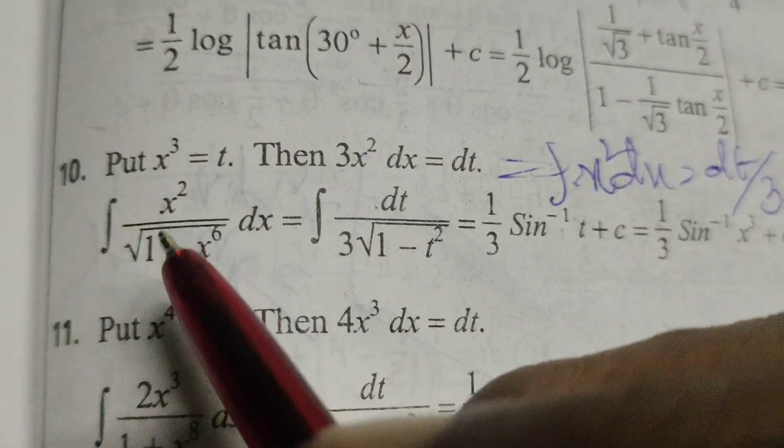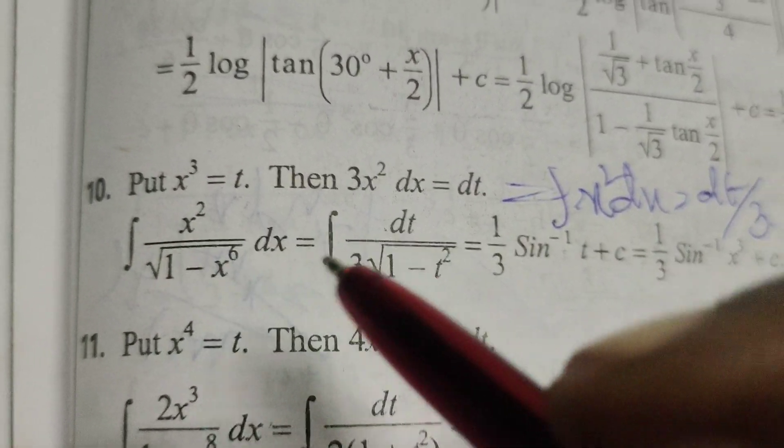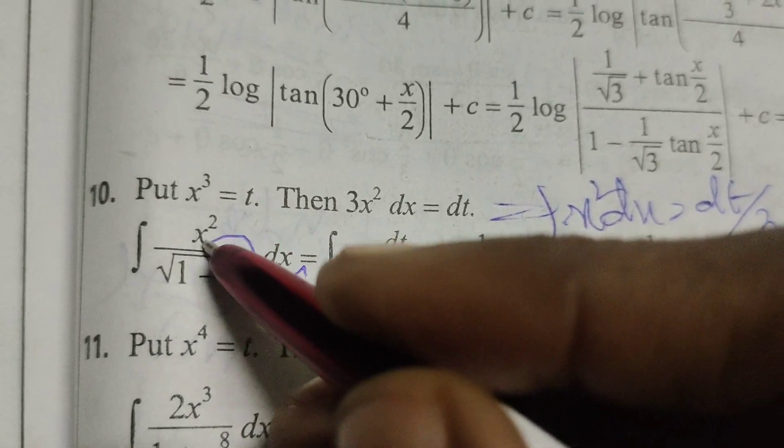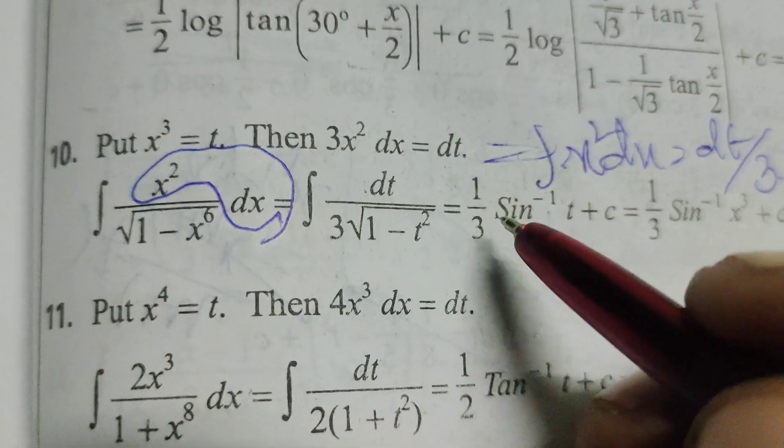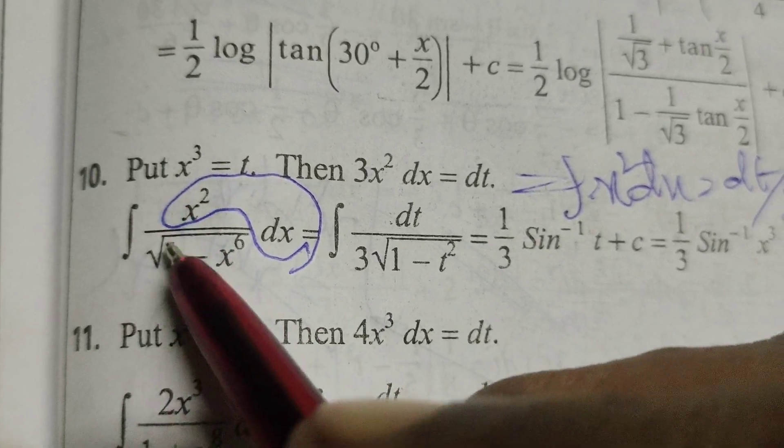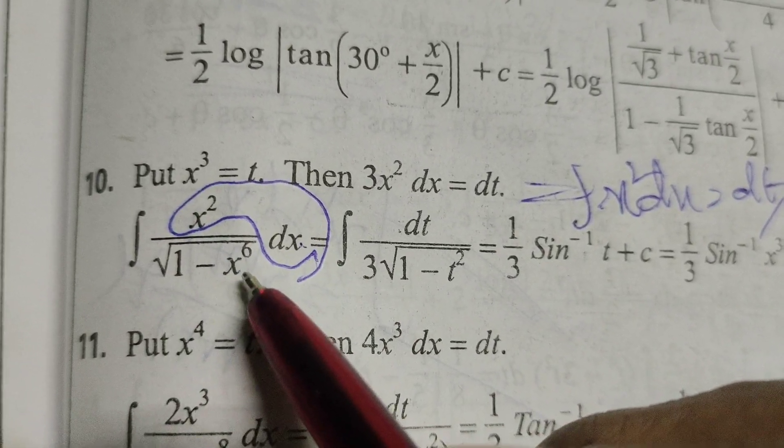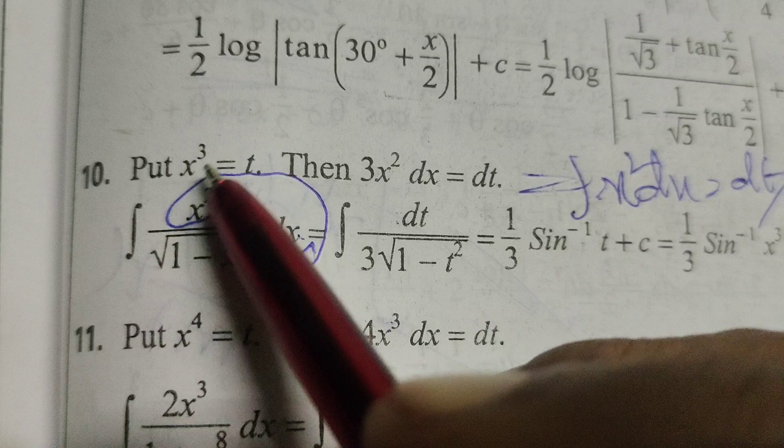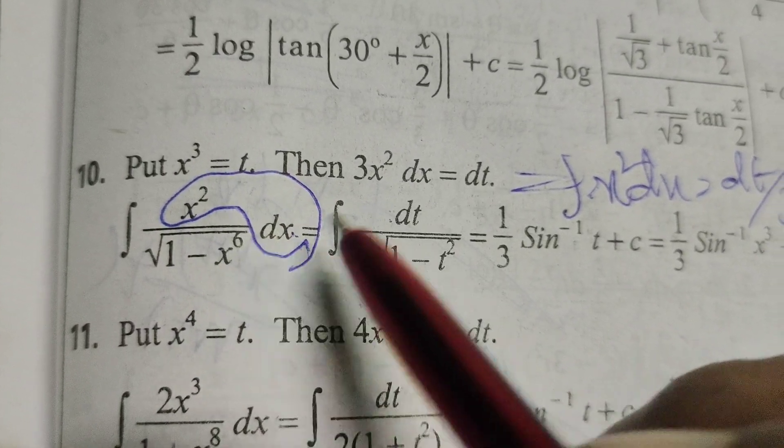In the given integral, here x square dx equals to write dt by 3, and 1 by root of 1 minus x cube means t, again x cube is there then t square.